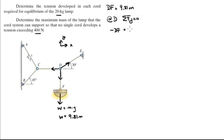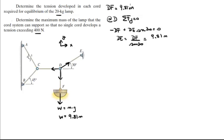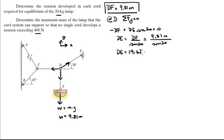At D, the sum of forces in the Y direction equals zero for equilibrium. DF comes down, so it's minus DF plus DE times sine of 30 equals zero. Solving for DE, you get DE equals DF over sine of 30, which equals 9.81 times the mass divided by sine of 30. So DE equals 19.62 times the mass. Also at D, the sum of forces in the X direction equals zero.